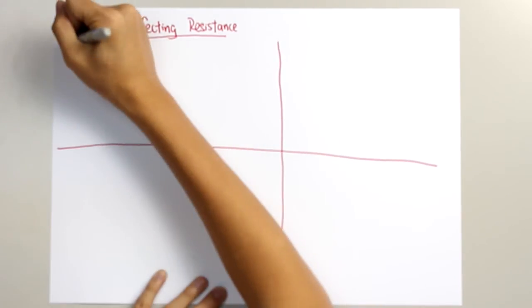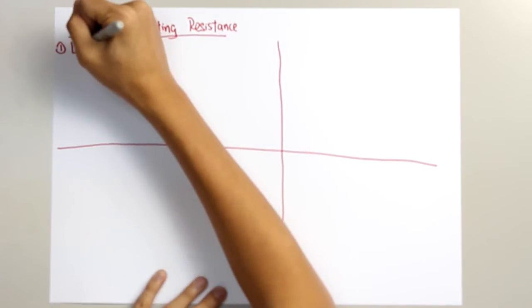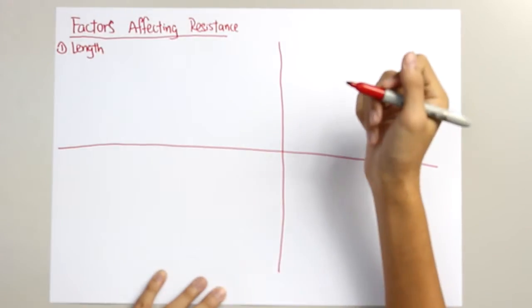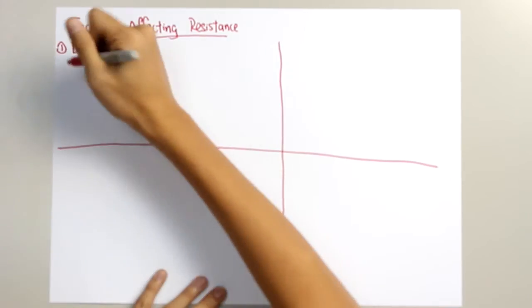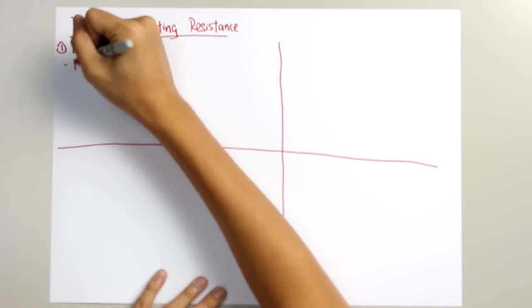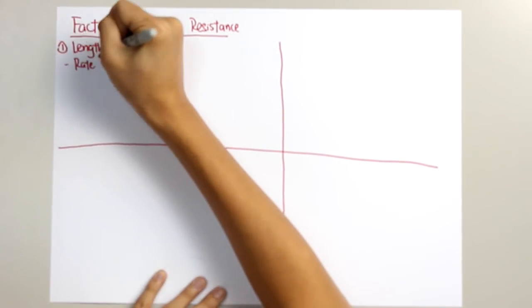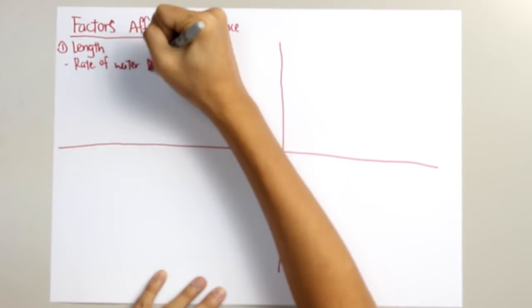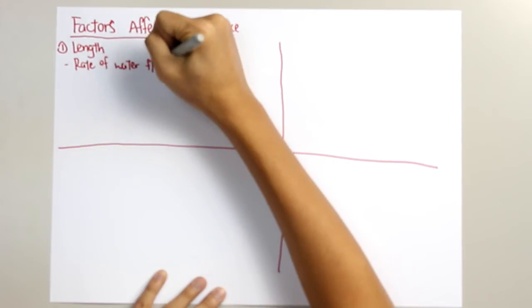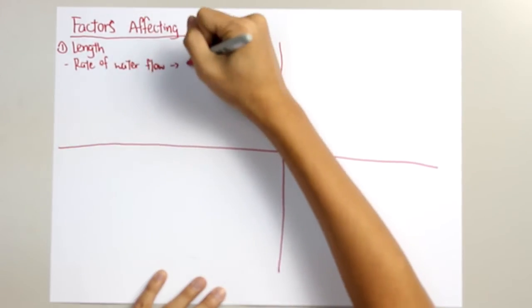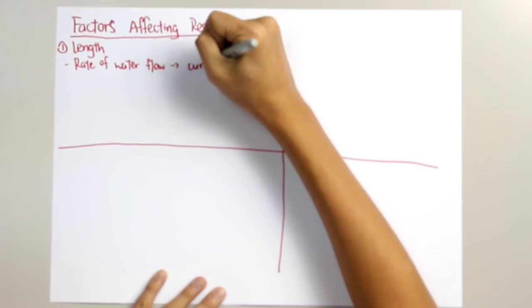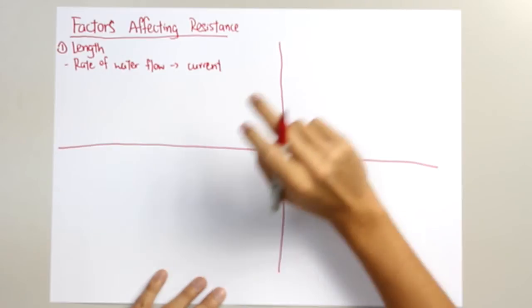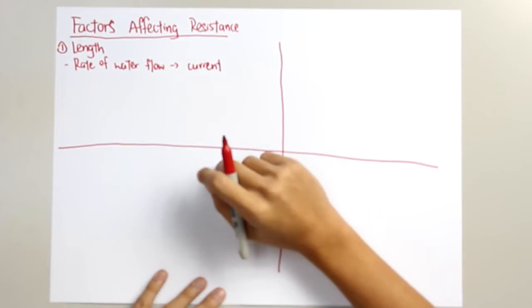First of all, the length. As we had compared the rate of flow of water to the electric current in the past lessons, we might as well explain the resistance using the water flow scenario.